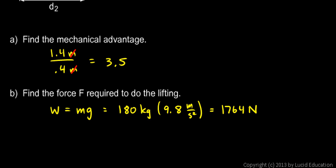That's how much that mass weighs. That's how much upward force we would have to lift with to lift it up. But because this wheelbarrow gives us a mechanical advantage of 3.5, the force that we have to lift with is this number divided by 3.5. So we write 1,764 newtons divided by 3.5, and this comes out to 504 newtons.